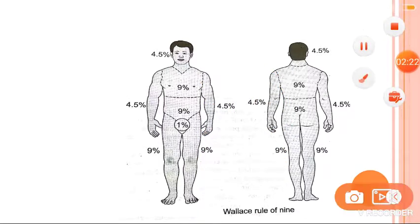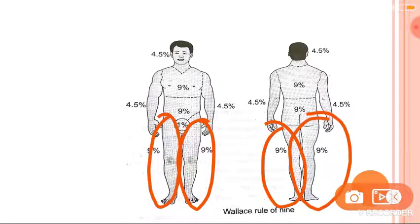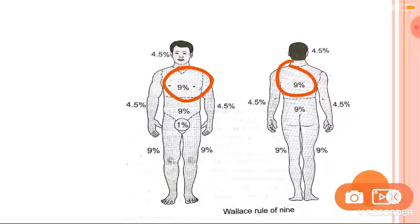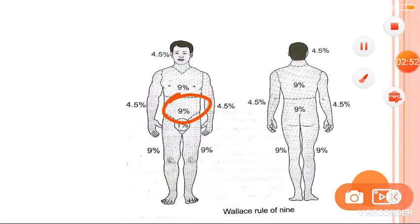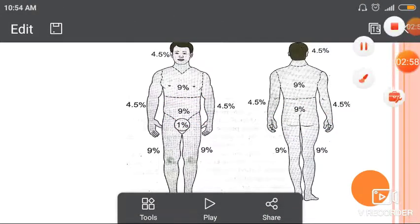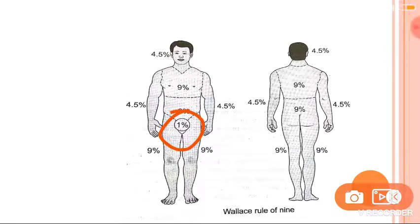Front of right lower limb is nine percent, front of left lower limb is nine percent, back of right lower limb is nine percent, and back of left lower limb is nine percent. Front of chest is nine percent, back of chest is nine percent, front of abdomen is nine percent, back of abdomen is nine percent. External genitalia becomes one percent — the perineum — so only this one area is one percent while everything else adds up to nine percent.